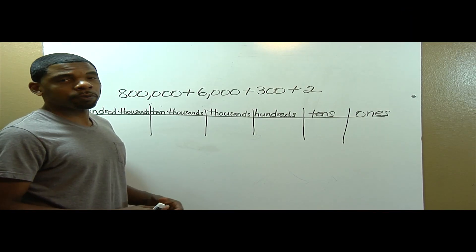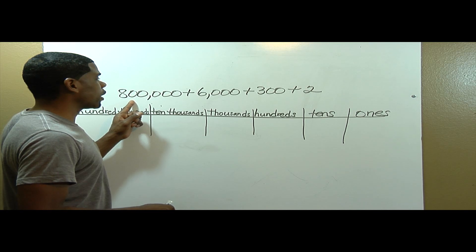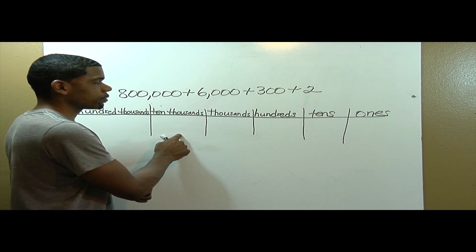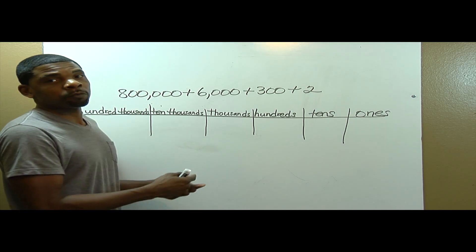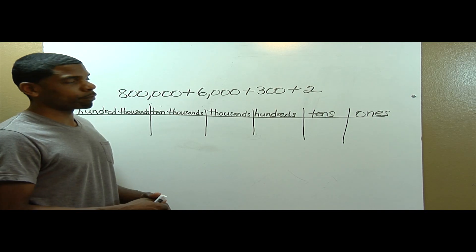In this problem, we will write this expanded form number in the place value chart, and find out what it looks like in standard form.